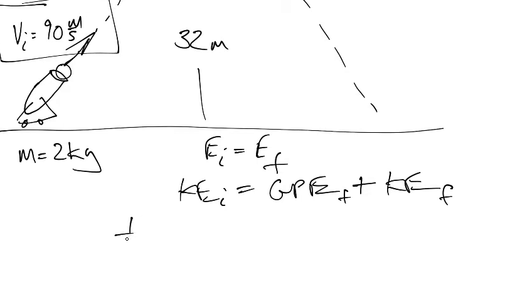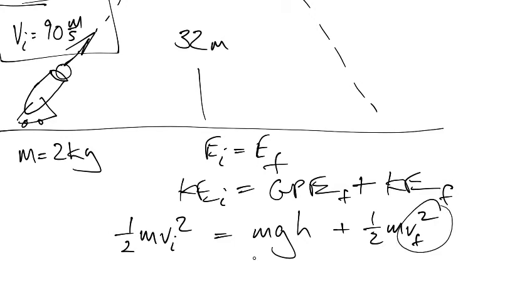This initial kinetic is one half m v_i squared. The final gravitational potential is mgh. And then we've also got that. And what are we looking for? We're looking for the final velocity.